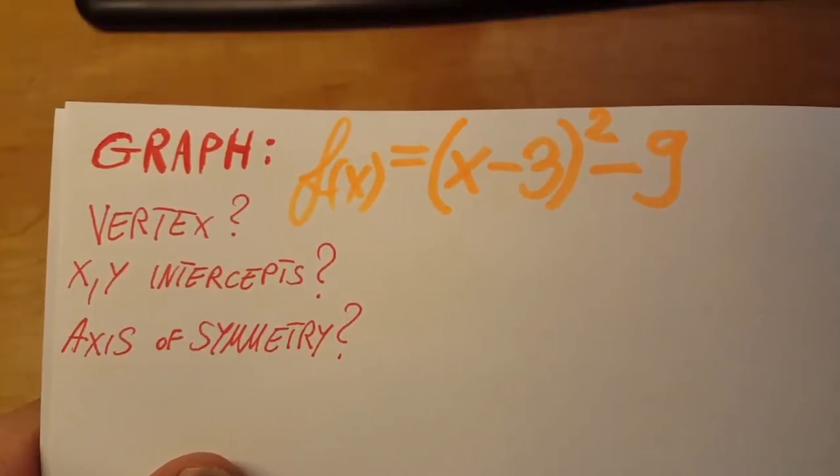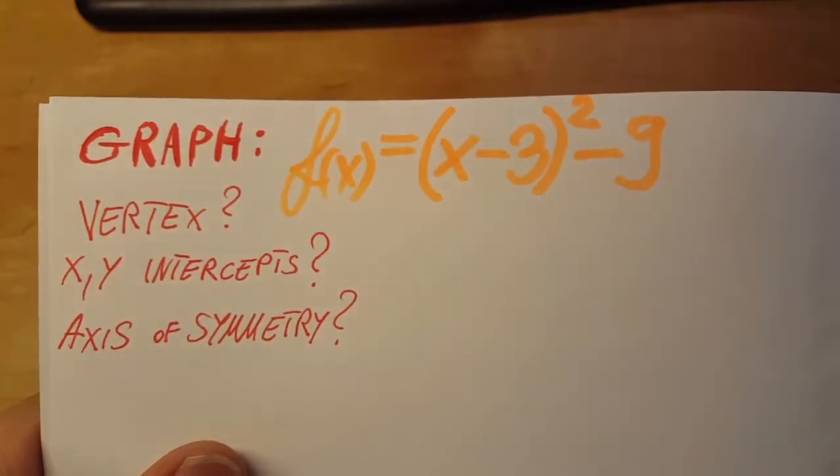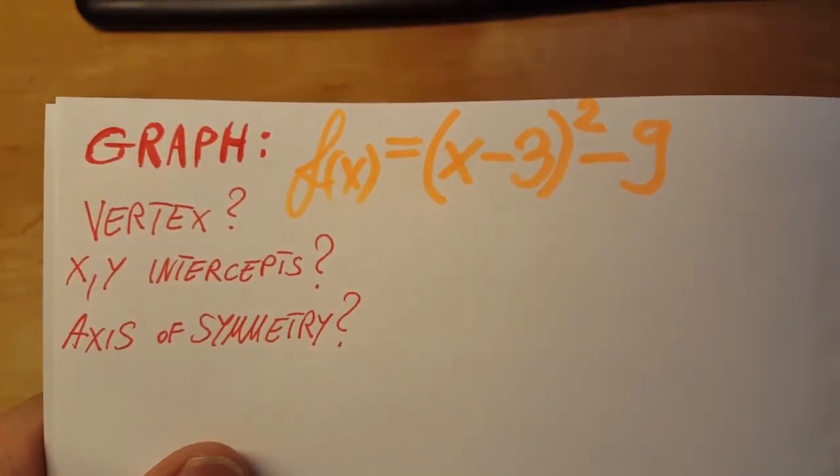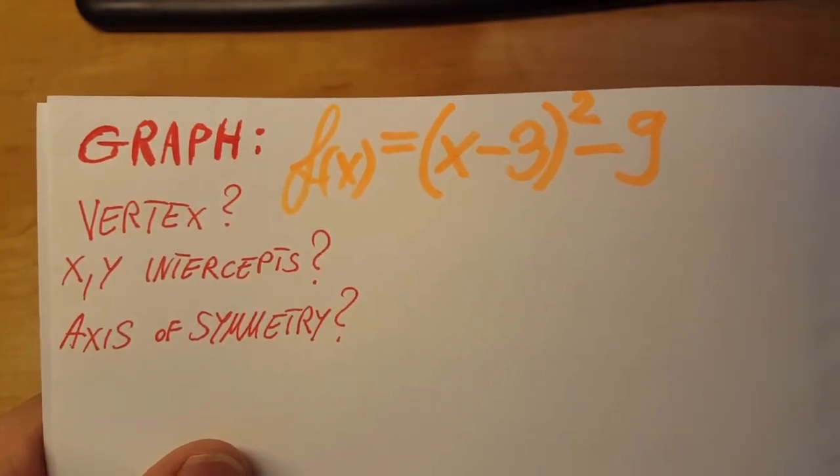Ok, this problem is asking us to graph the quadratic functions given right here. They want us to find the vertex, x and y intercepts, and the axis of symmetry.